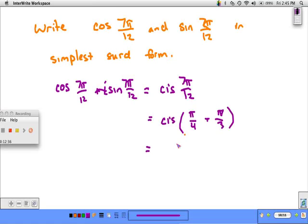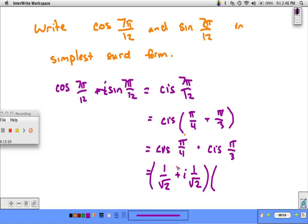Then I'm going to rewrite this not using the cis and change it to rectangular form. Cis of pi over 4 means cosine pi over 4 plus i sine pi over 4, and cis of pi over 3 means cosine pi over 3 plus i sine pi over 3.